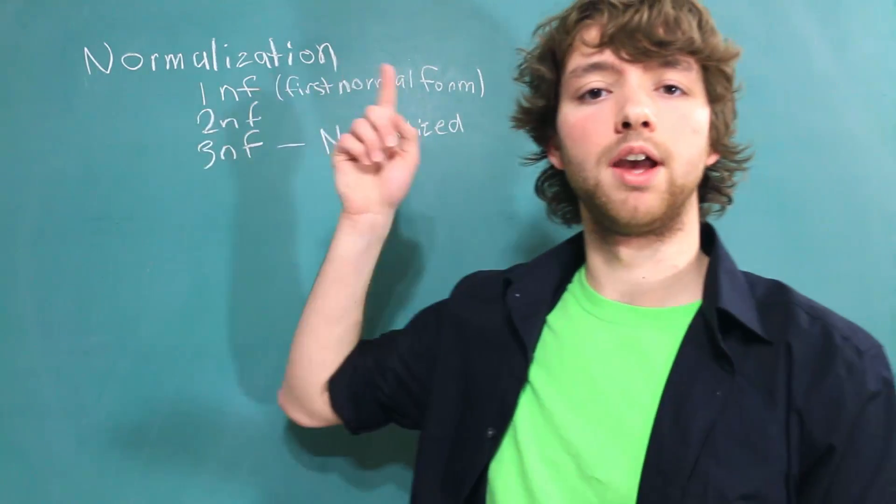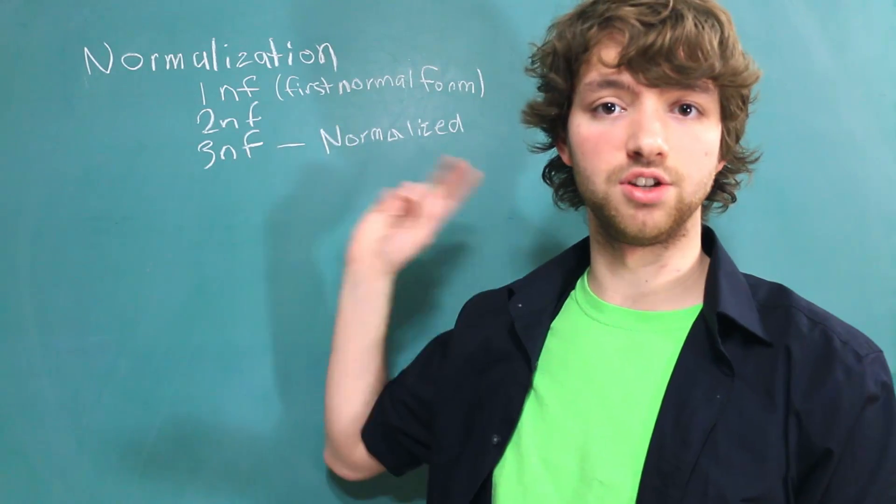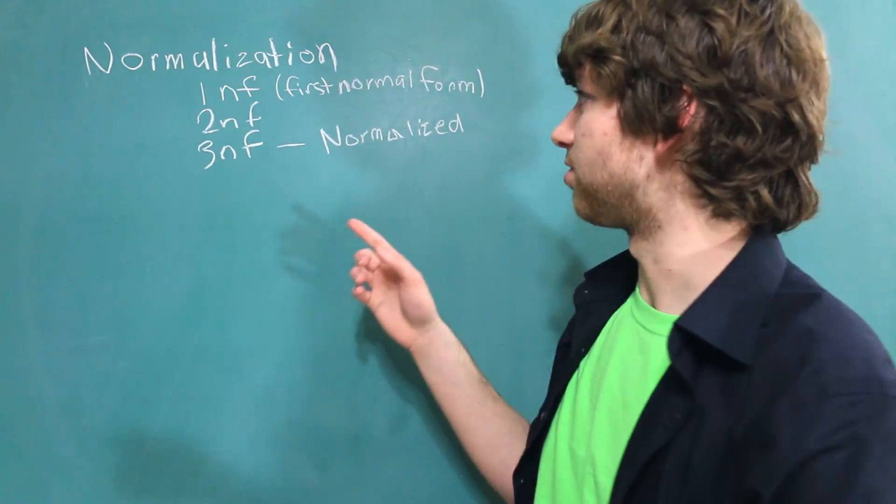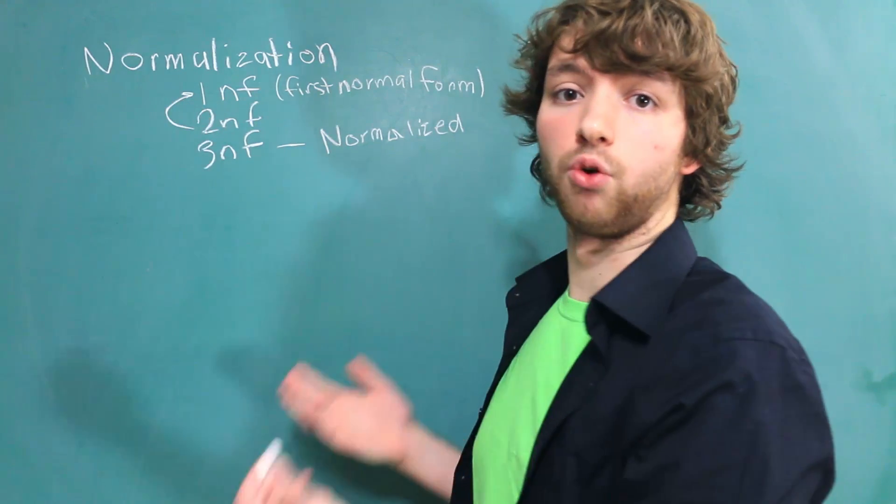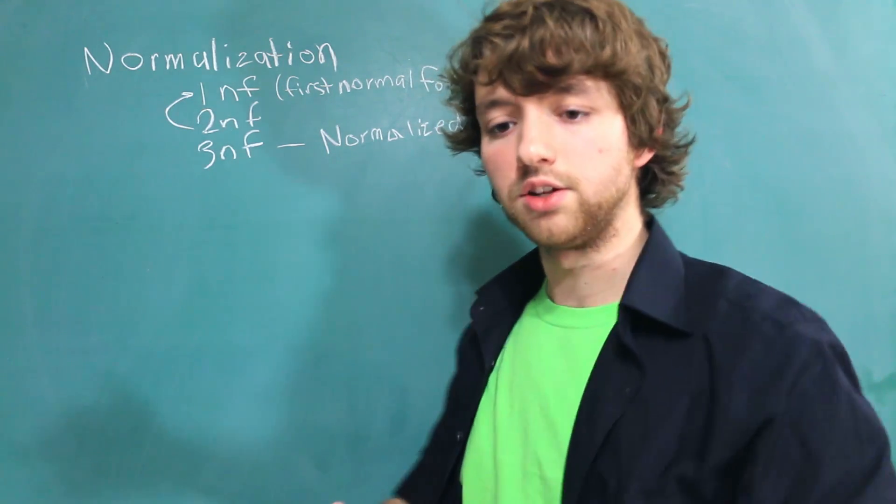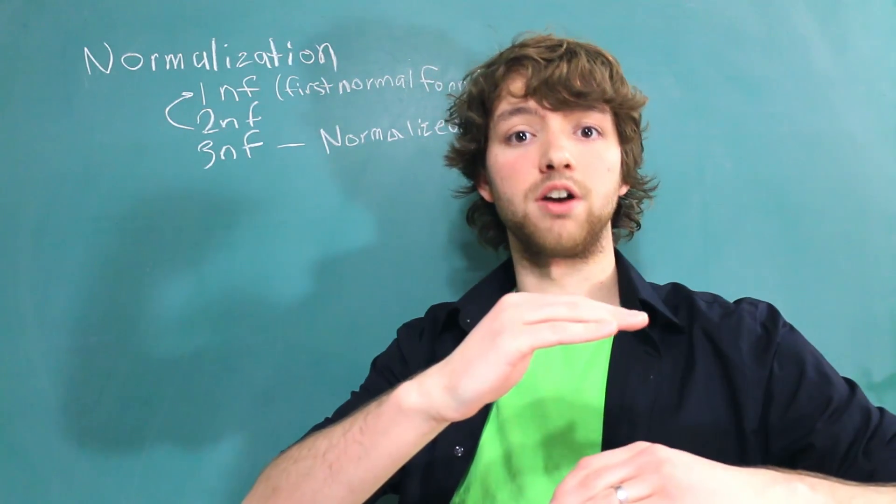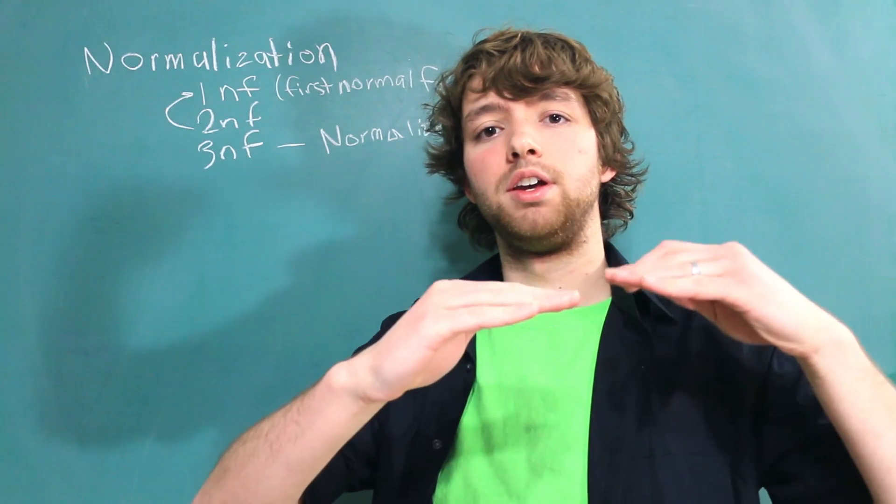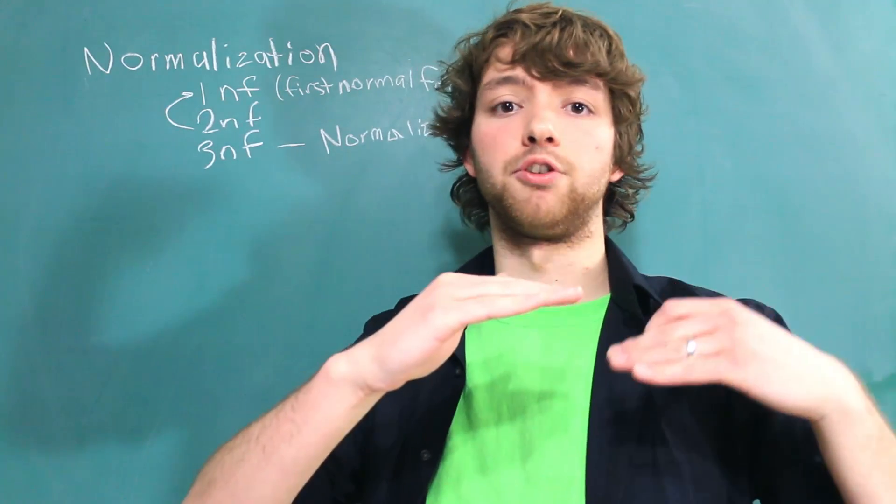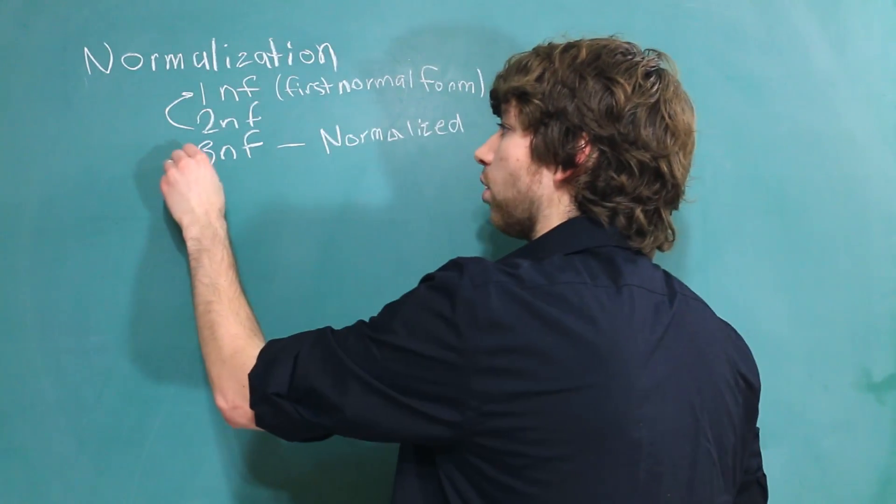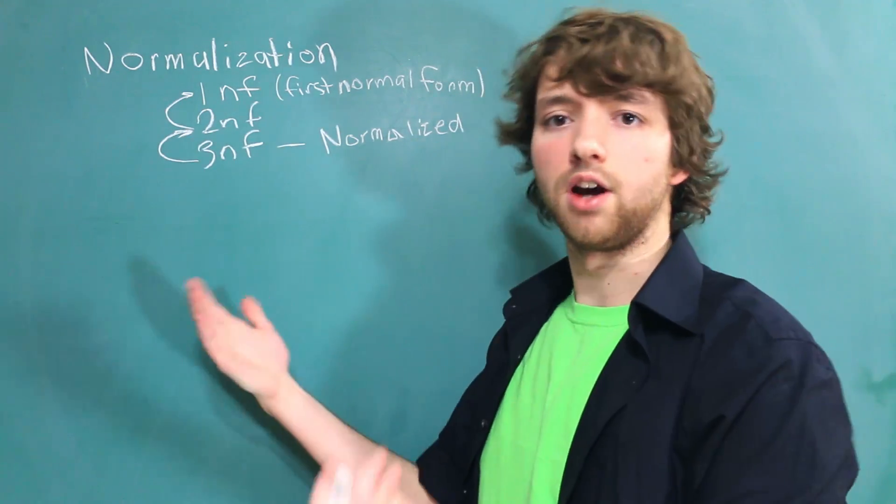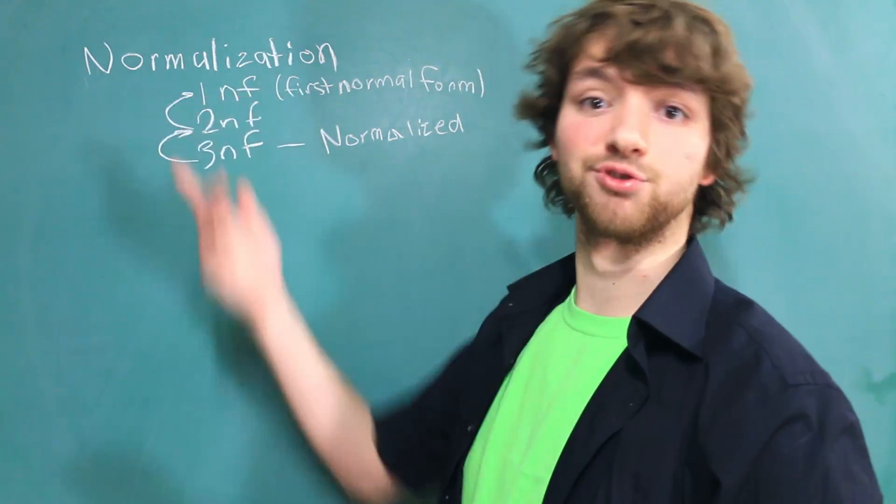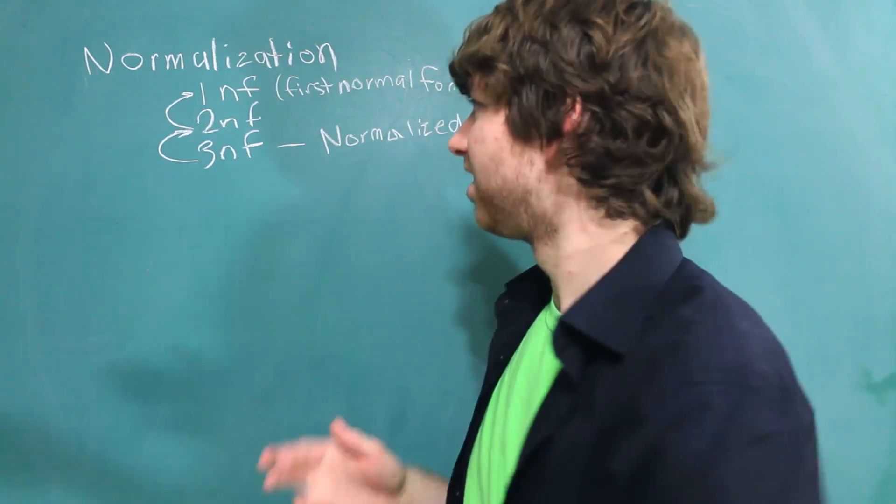Each normal form has to have the previous one done in order to do it. So second normal form requires that first normal form is already complete. Sort of like if you have these filters in the water filter, the second one is going to be hit after the first one is already done. Third normal form, same thing, it requires that second normal form be done. And obviously if second normal form is done, first normal form is also done. So you have this chain.